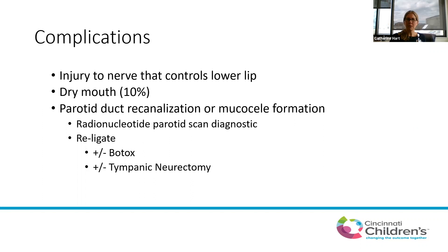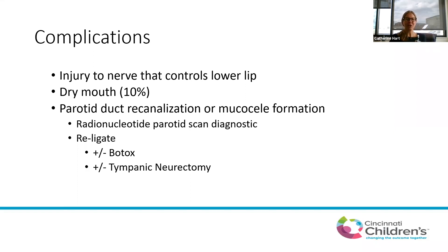In literature, overdry mouth occurs in about 10%, though anecdotally we probably see it less frequently. Probably the most common complication we see is that those parotid ducts can recanalize — you continue to get parotid gland activity, or you can get a mucocele forming along the duct. If we're worried the parotid duct has recanalized, we diagnose that using a spit scan or radionucleotide parotid scan, looking for activity within the gland. If there's still ongoing activity, you can re-ligate it. We'll often do Botox at the same time as ligation to minimize production while the duct scars off and the gland atrophies. There's also a potential role for tympanic neurectomy to further decrease stimulation of salivary production.